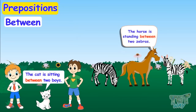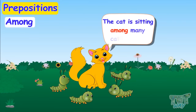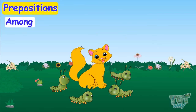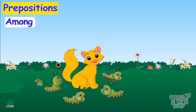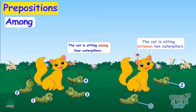Now we will learn where to use 'among'. The cat is sitting among many caterpillars. When something or someone is in the center of more than two things, we use 'among'. And 'between' is used when something or someone is in the center of two things.